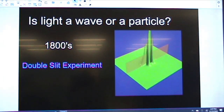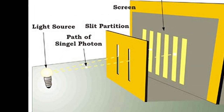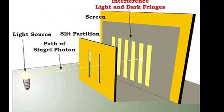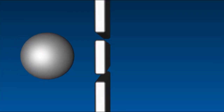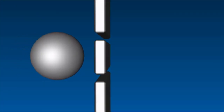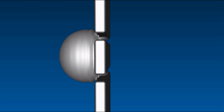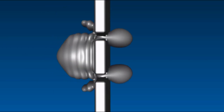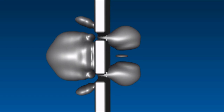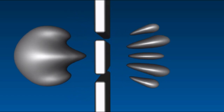First of all, the big question in the 1800s was: is light a wave or is light a particle? So scientists designed some pretty elaborate experiments to test light and see if it was a wave or a particle. One of those experiments was called the double slit experiment.